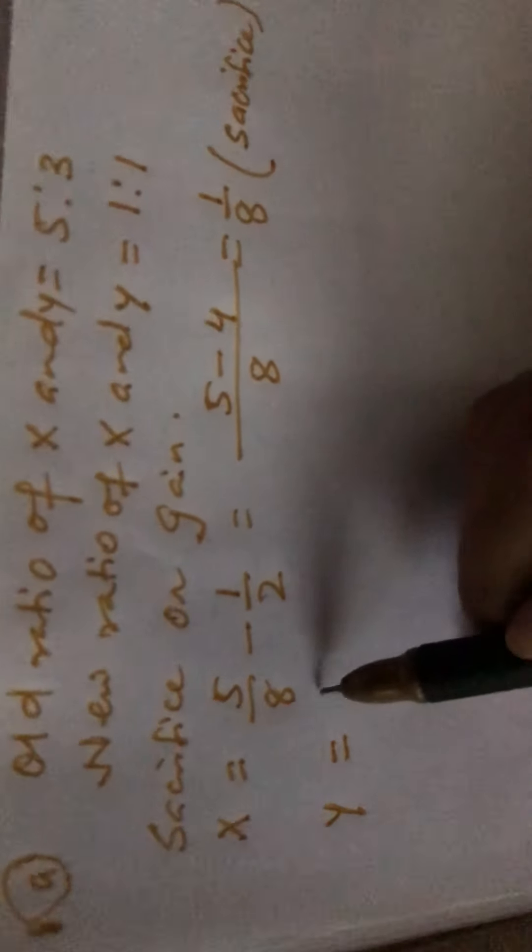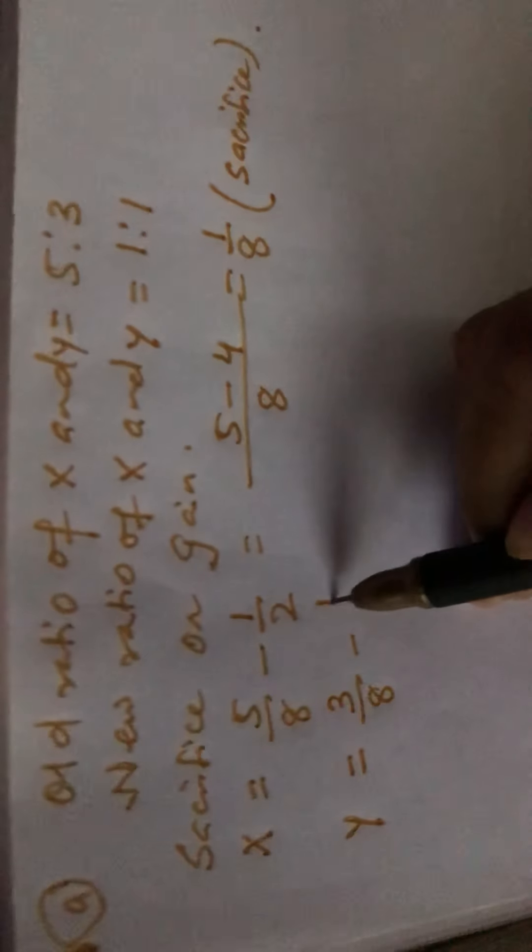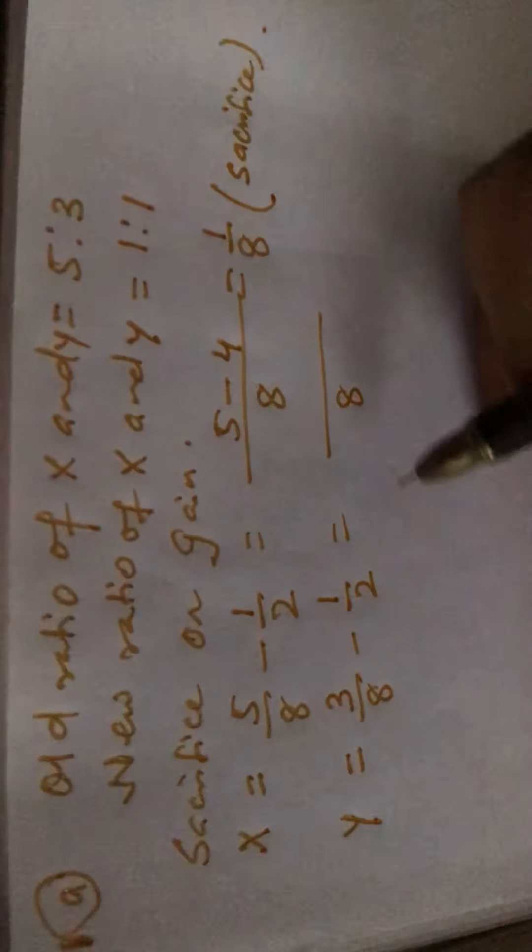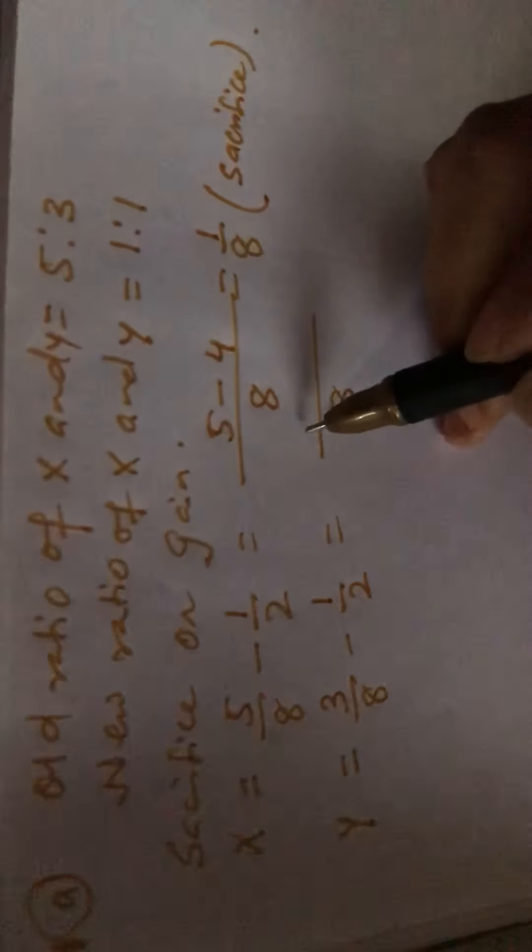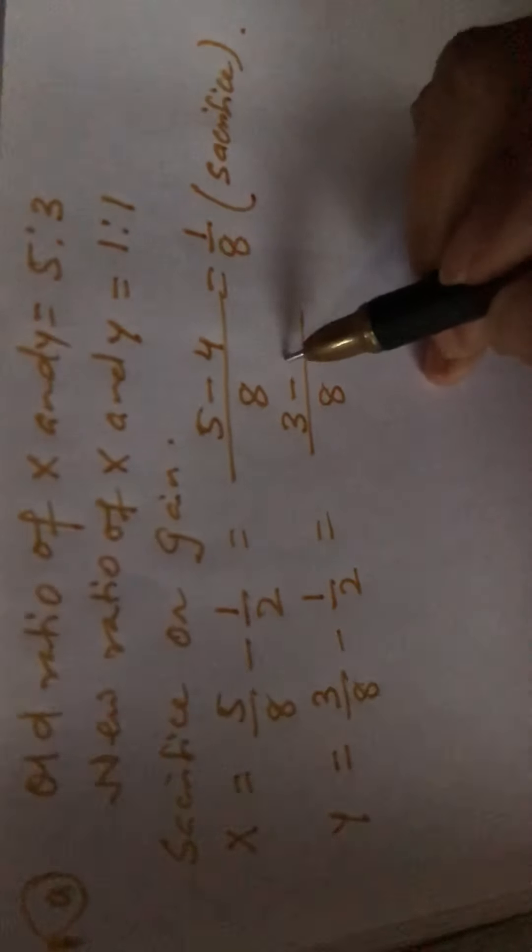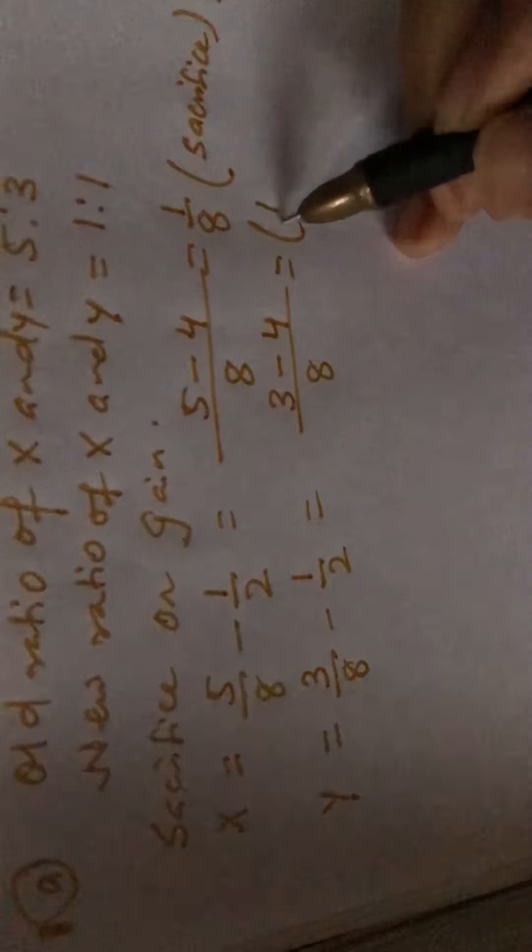Y's ratio is, old ratio is 3 by 8 minus new ratio is 1 by 2. So LCM will be same, 8. 1 into 3 is 3, minus 2 fours are 8, 4 into 1 is 4, equals 3 minus 4, minus 1 by 8.